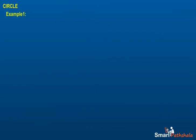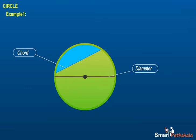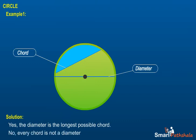Example 1: A. Is every diameter of a circle also a chord? B. Is every chord of a circle also a diameter? Solution: A. Yes. The diameter is the longest possible chord. B. No. Every chord is not a diameter.